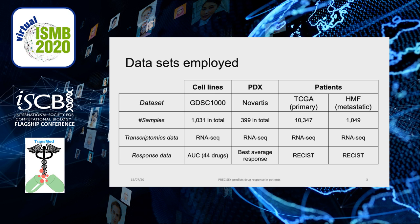To do so, we make use of four datasets: GDSC1000 for the cell lines, Novartis-PDXA for the PDX, and two patient cohorts — TCGA for primary tumors, and we introduce a new cohort of metastatic samples. Drug response is measured for cell lines as AUC (area under the curve), best average response for PDX, and RECIST clinical criterion for TCGA and the HMF patients.